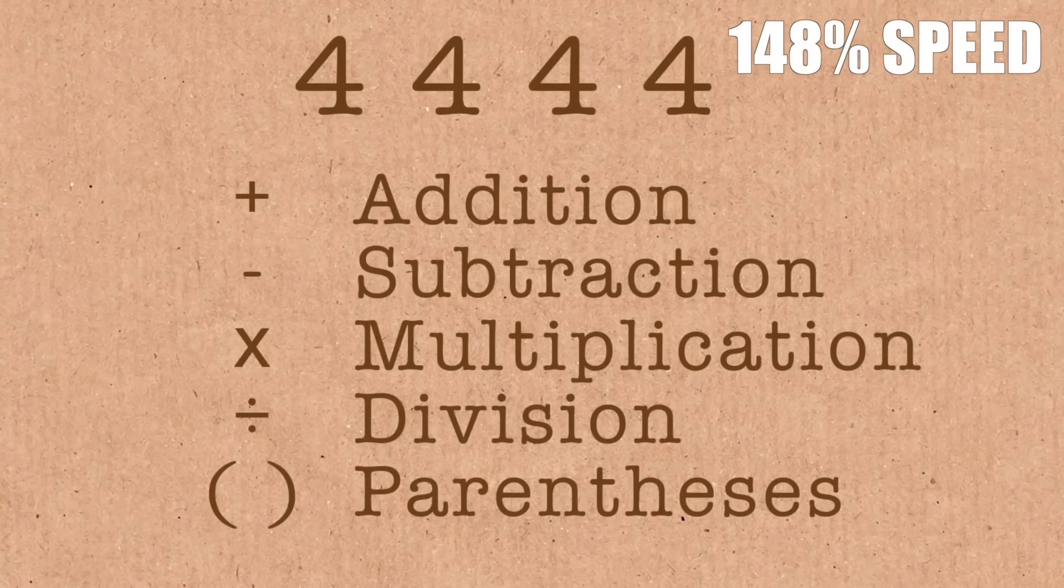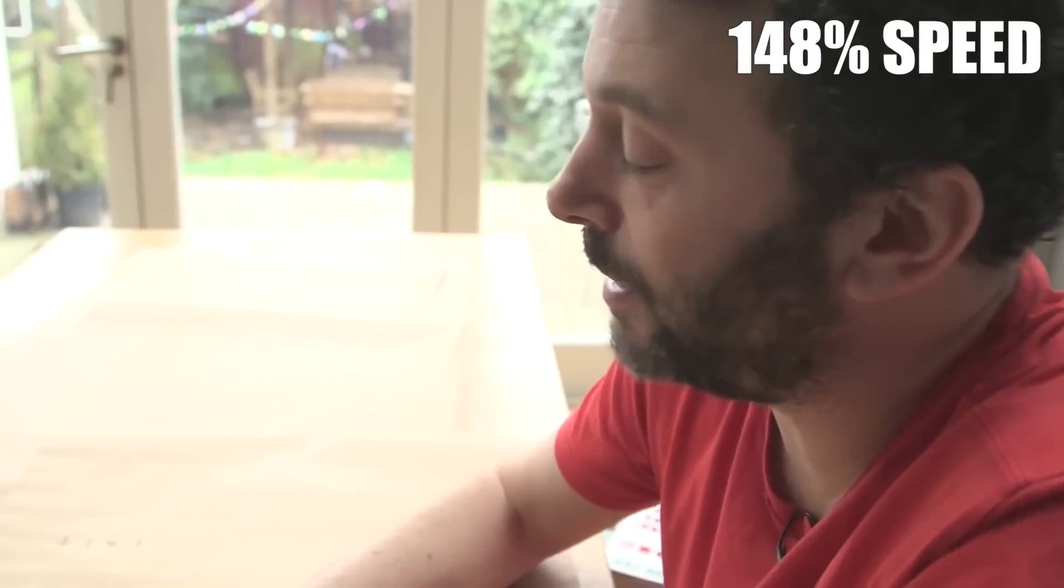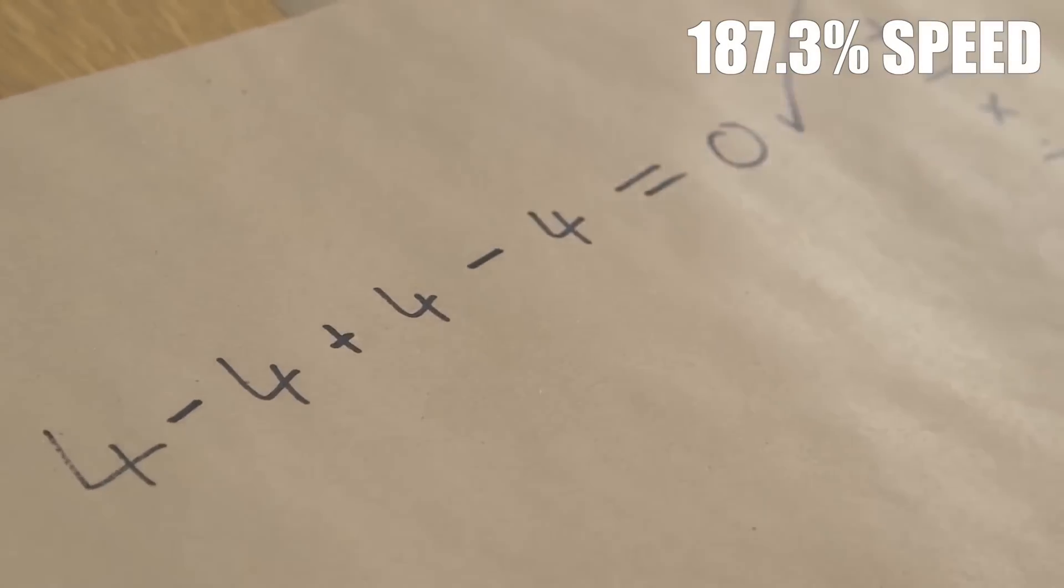Well let's start at zero, and we're going to then get to one, then we go to two. So with zero, how do you get four fours to equal zero? It's kind of easy, you can get four minus four plus four minus four, that's zero. Brilliant, we've got zero.